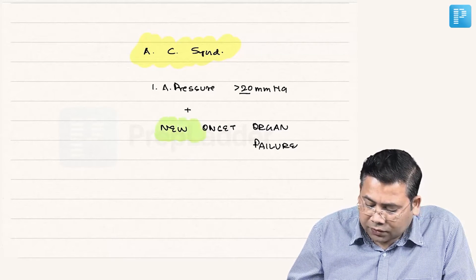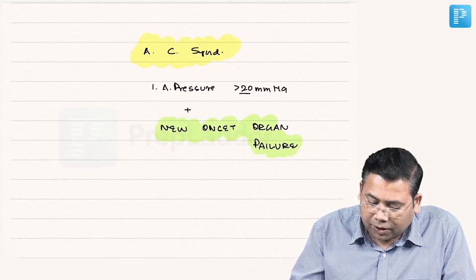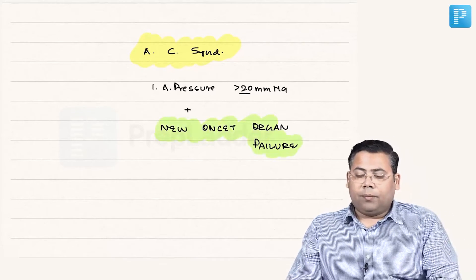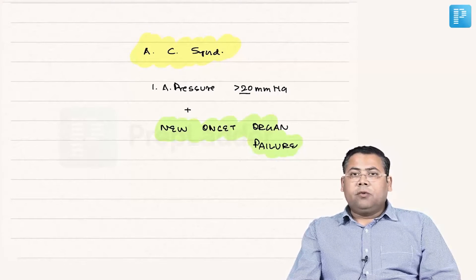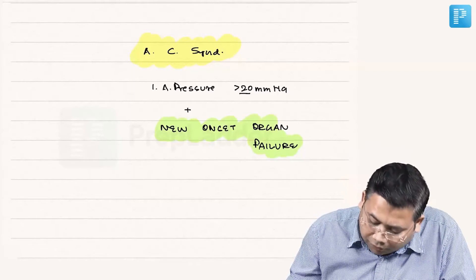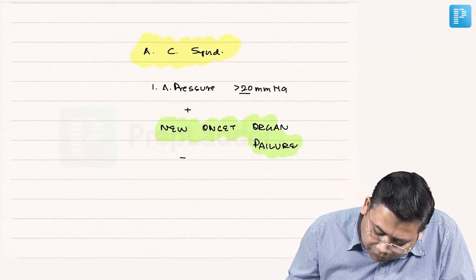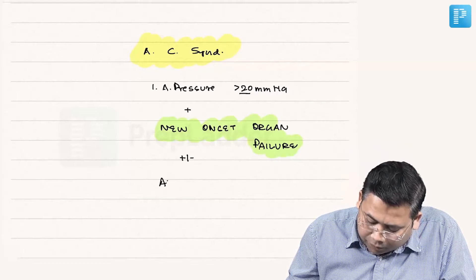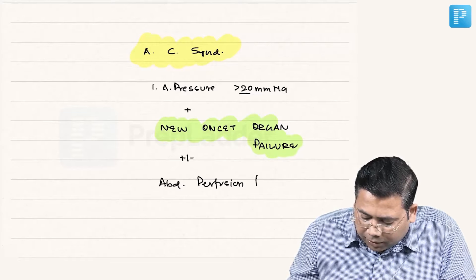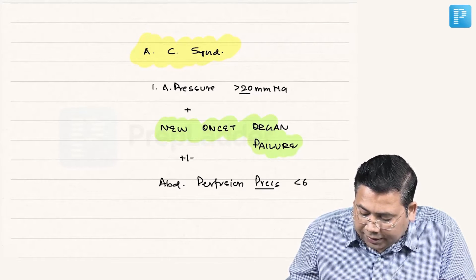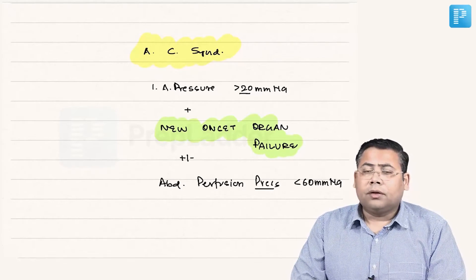New onset organ failure is actually the hallmark feature of ACS. So the criteria is: intra-abdominal pressure more than 20 mmHg, plus new onset organ failure, and plus or minus abdominal perfusion pressure less than 60 mmHg. This is very important.